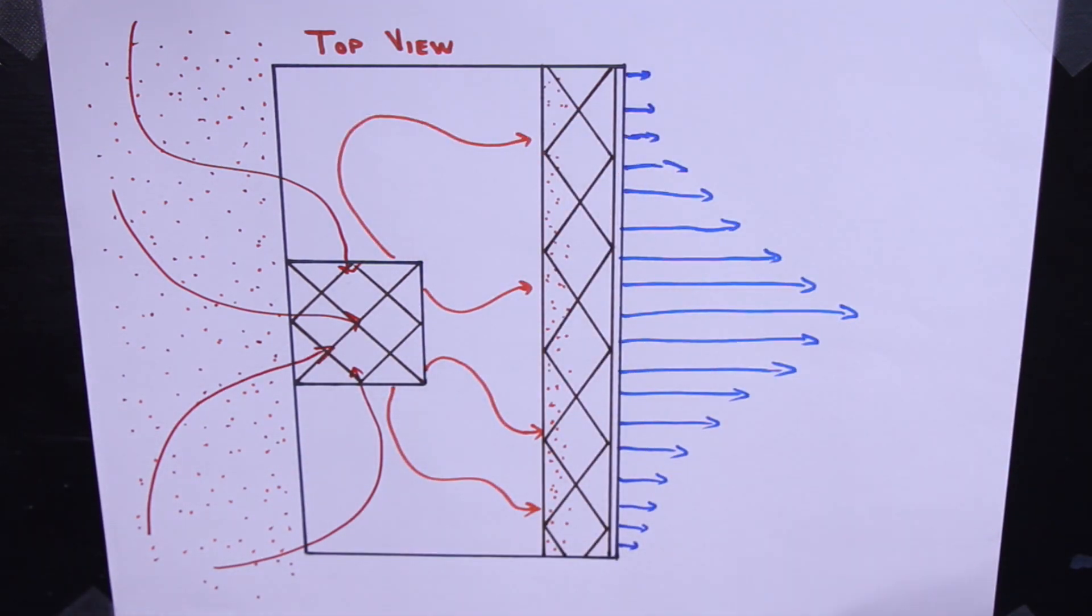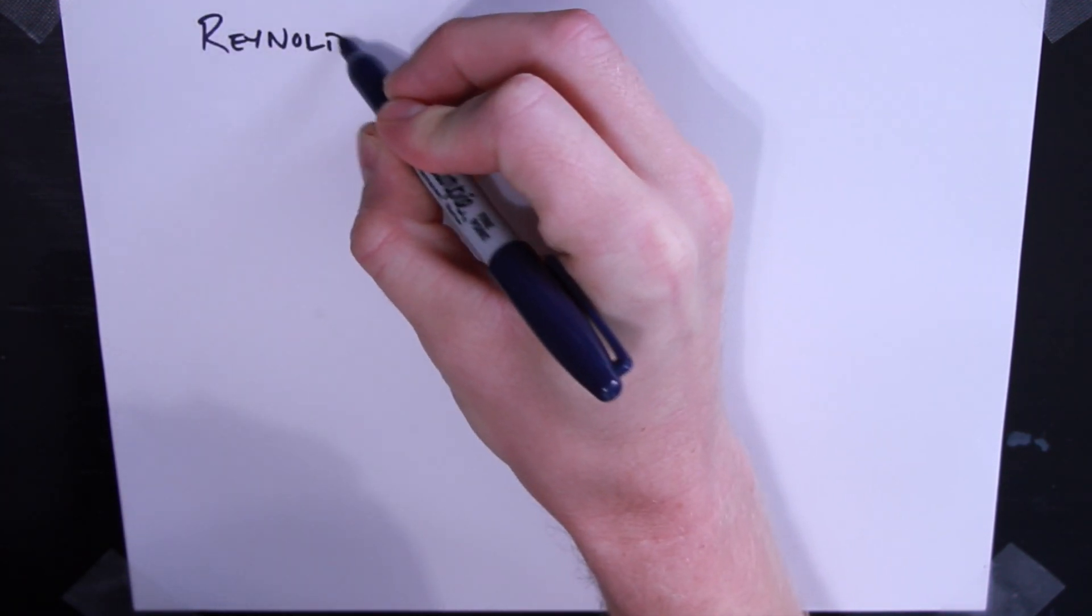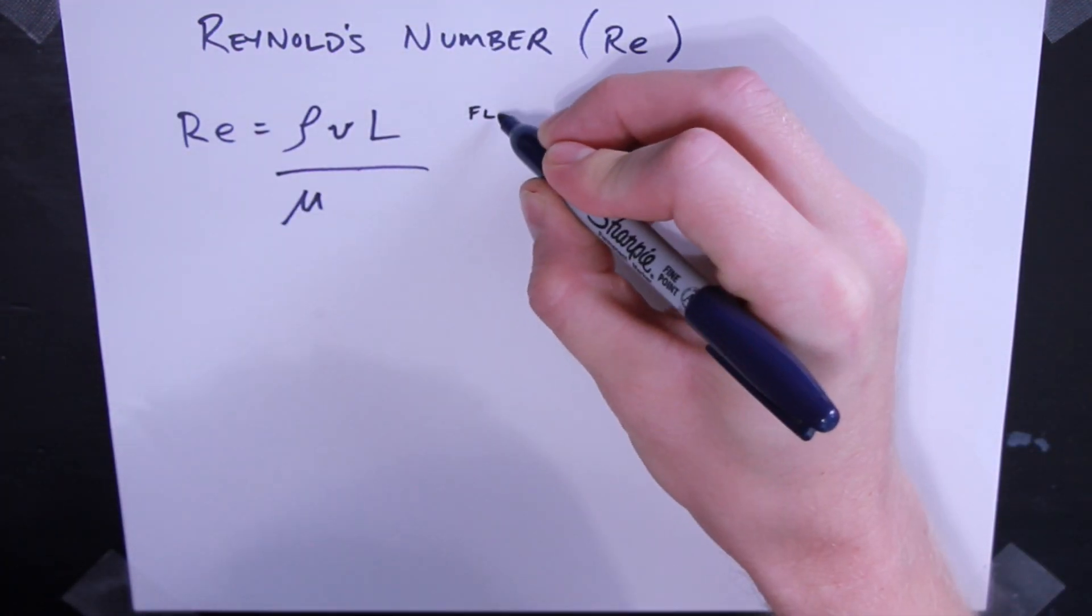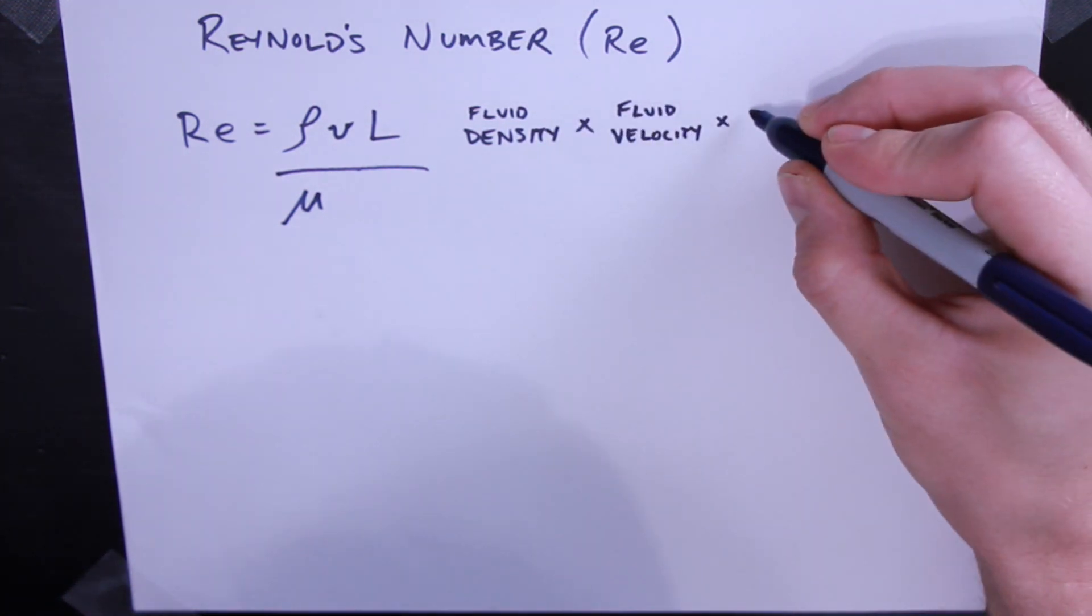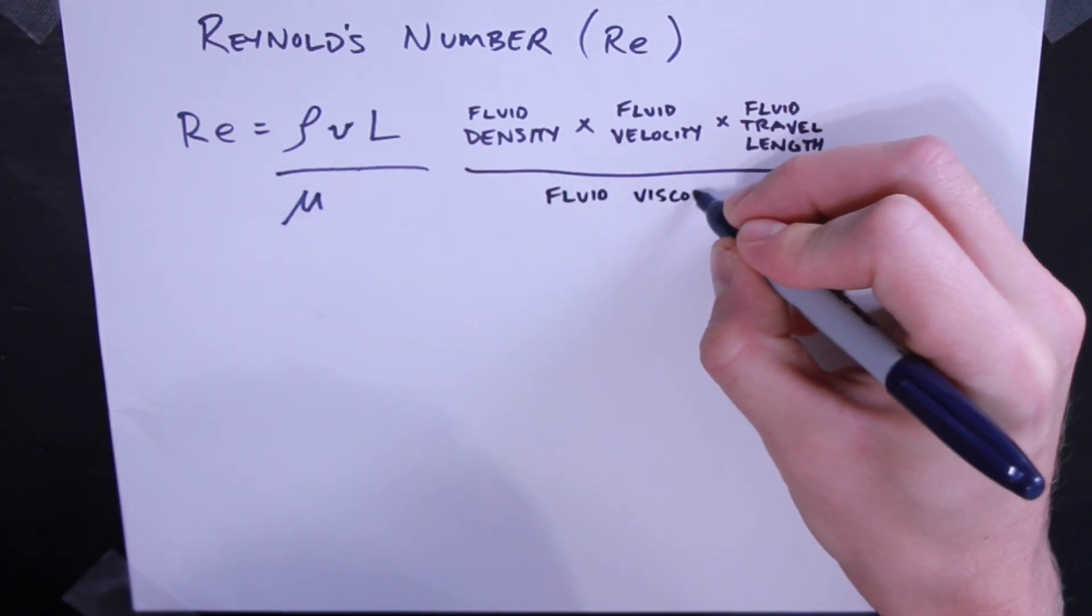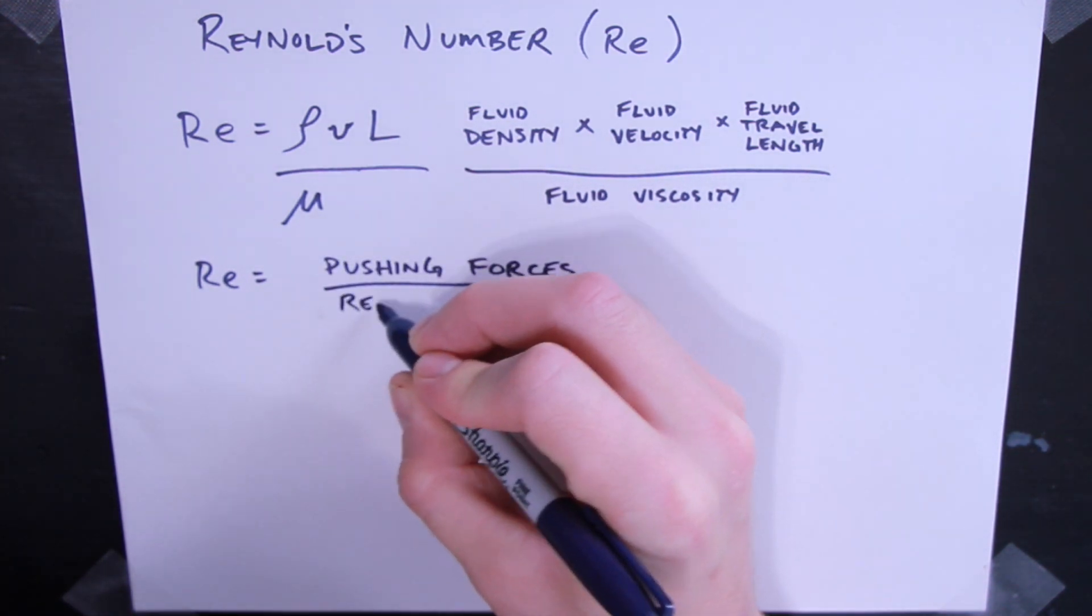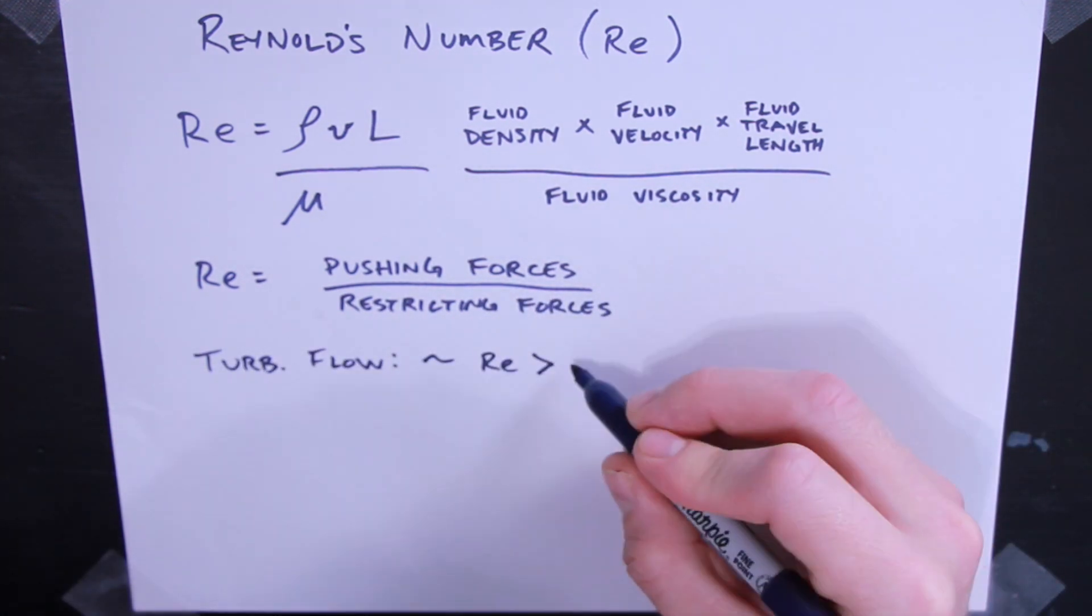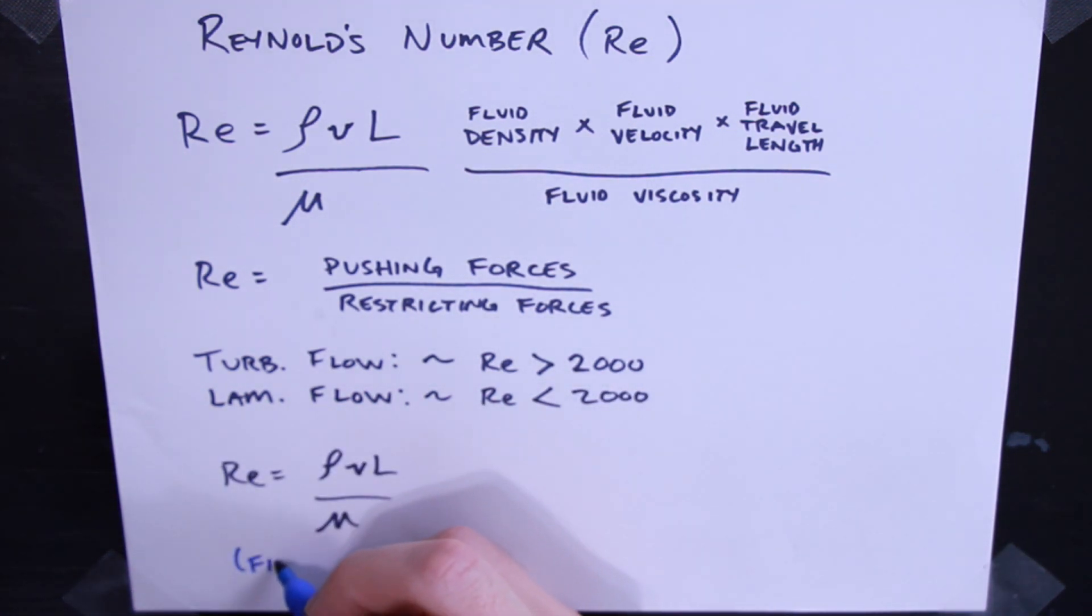So there's this really cool math equation called the Reynolds number, and it's a ratio between the pushing forces and the restricting forces that occur in a fluid. The equation is the fluid density times the fluid velocity times the length that the fluid has traveled divided by the viscosity of the fluid. Another way to look at this is the pushing forces divided by the restricting forces. If the ratio ends up being greater than 2000, it's typically going to be turbulent flow and less than 2000 will be laminar flow.